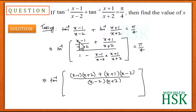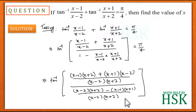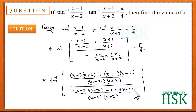Multiplying out, the numerator becomes (x-1)(x+2) + (x+1)(x-2), all over (x-2)(x+2). The denominator simplifies as (x-2)(x+1) upon (x-2)(x+2), and this is equal to π/4.